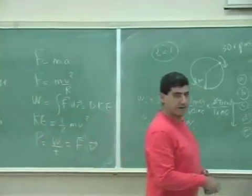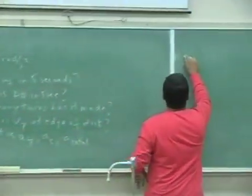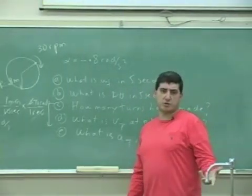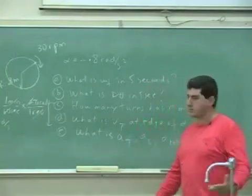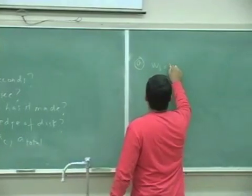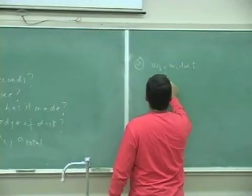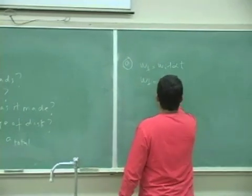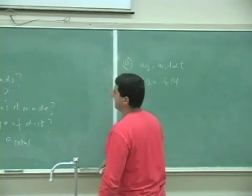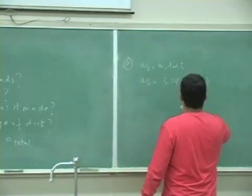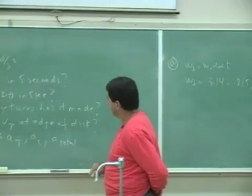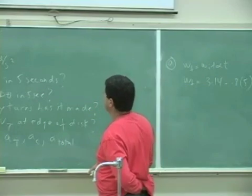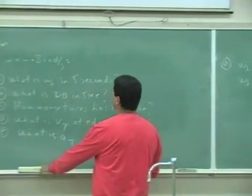Once we have that, the rest of it follows through. So in part A, what is the omega final in five seconds? Which equation should I use out of the four? I would do omega final is omega initial plus alpha t. Omega initial is pi, so let's just approximate it as 3.14. Alpha is negative 0.8 times five seconds. Oh, actually, it's now negative. So let's change this. Let's make this 0.4.